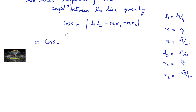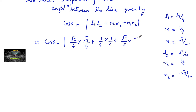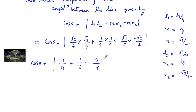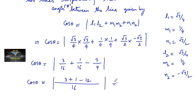So we have cos θ = mod of (l1·l2 + m1·m2 + n1·n2) = mod of (root 3 upon 4 × root 3 upon 4) + (1 upon 4 × 1 upon 4) + (root 3 upon 2 × minus root 3 upon 2). That gives 3 upon 16 + 1 upon 16 minus 12 upon 16, which equals mod of minus 8 upon 16 = mod of minus 1 upon 2.